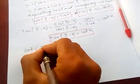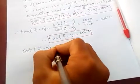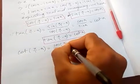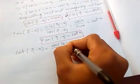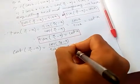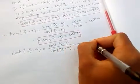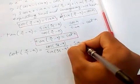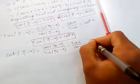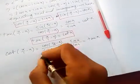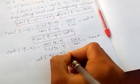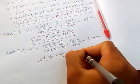Therefore cot(90-x) is cos(90-x) over sin(90-x), which is sin x over cos x, which is tan x. Therefore cot(90-x) = tan x.